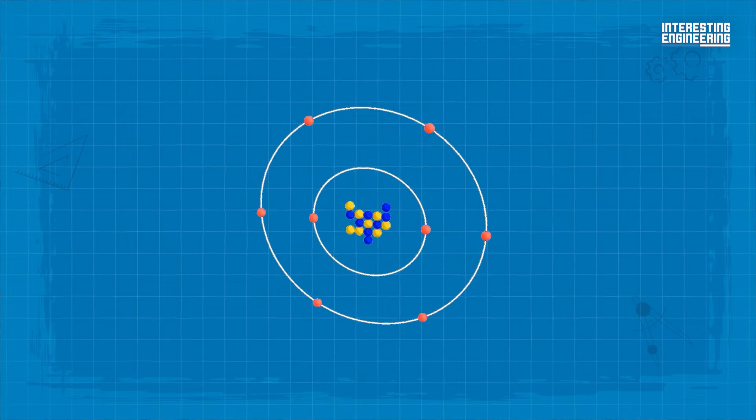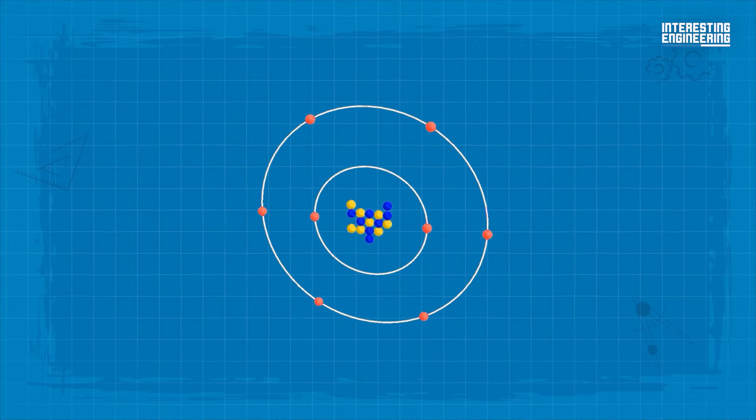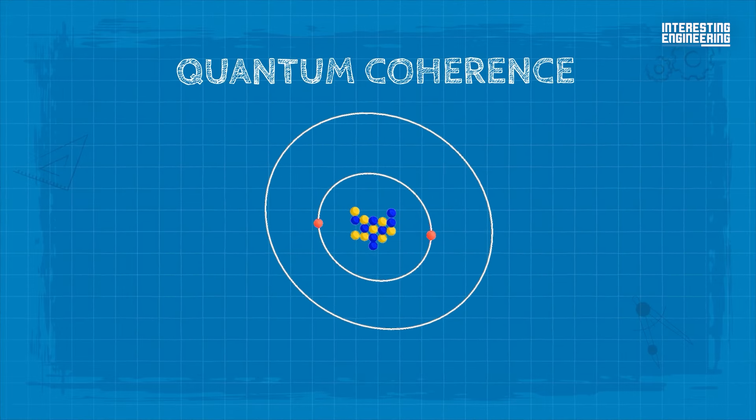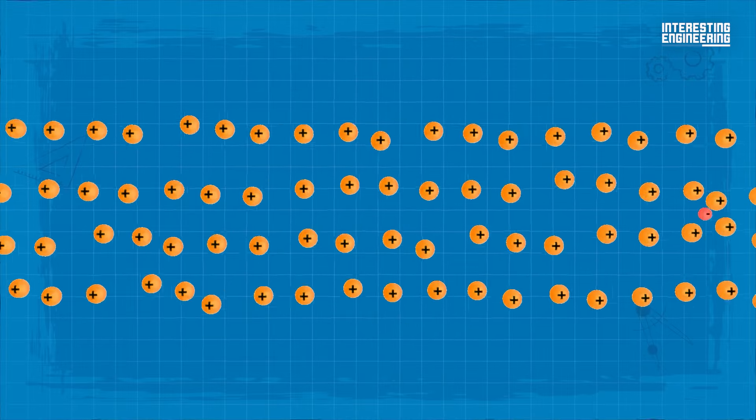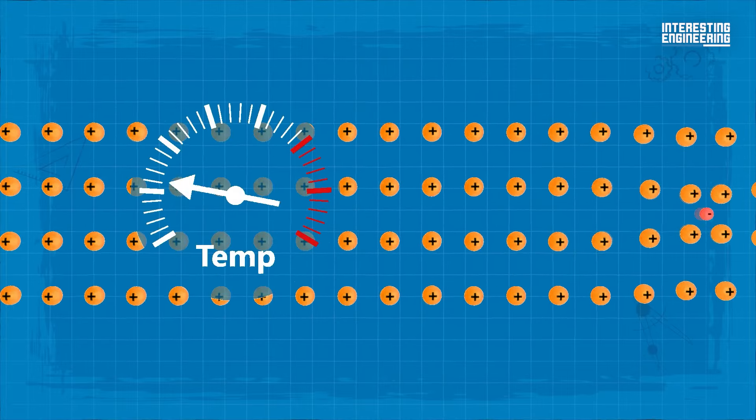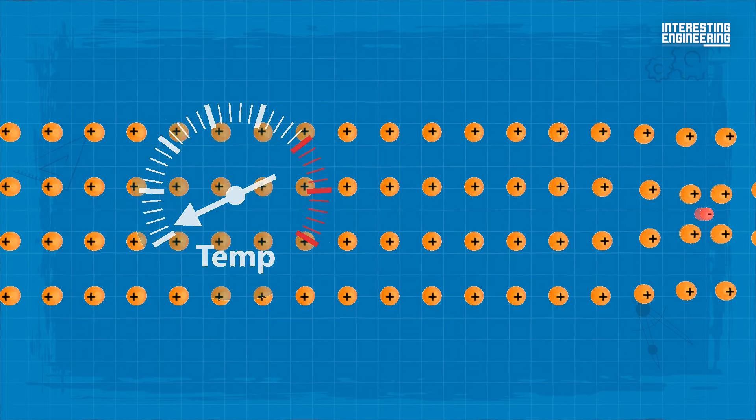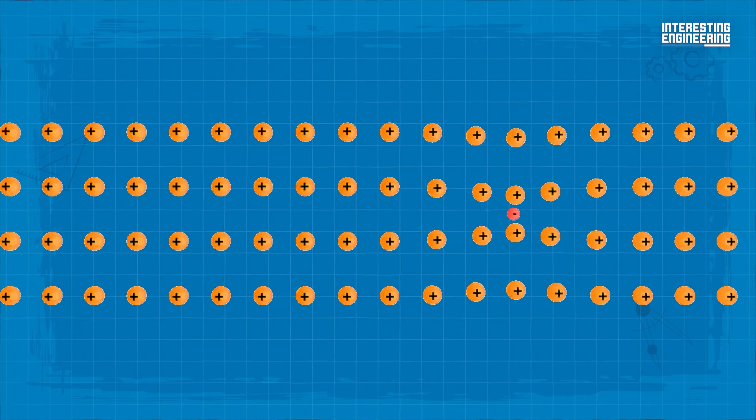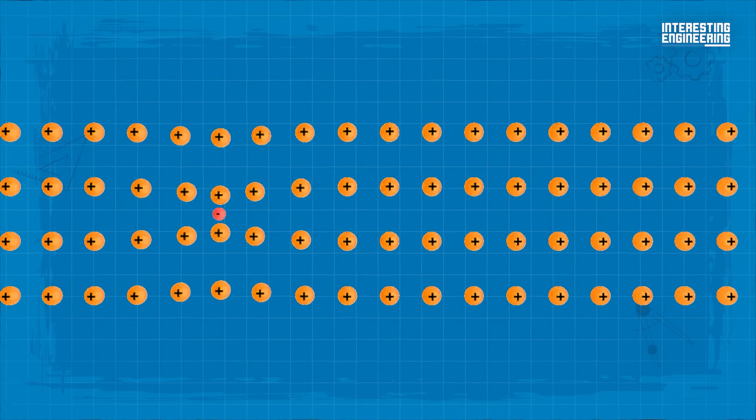This synchronized movement of the electrons is what we call quantum coherence. Because there is no resistance in superconductors, the Cooper pairs can carry electric currents without any energy loss. This property is what makes superconductors so remarkable and valuable.